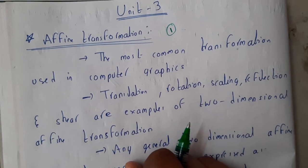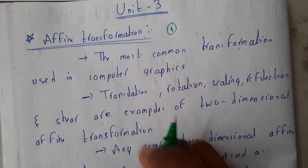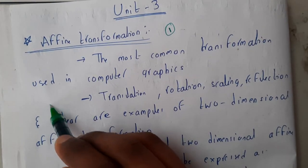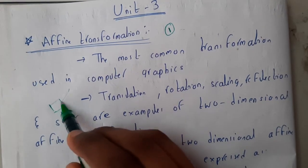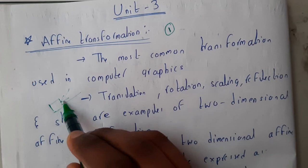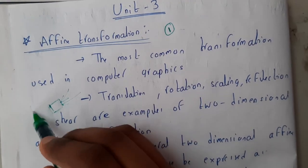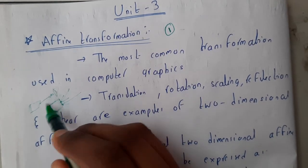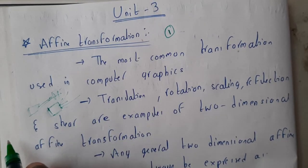Basically, what are affine transformations? Affine transformations are nothing but the transformation, movement, or any kind of operation on a particular object. The different operations which you can do include moving the object from one place to another place — that is nothing but translation.